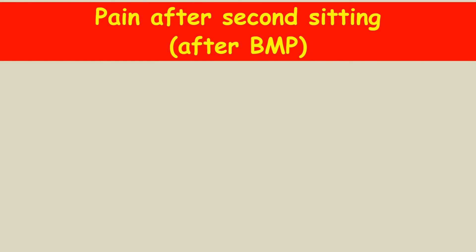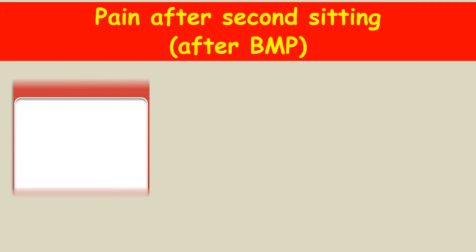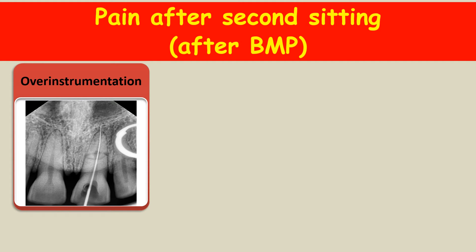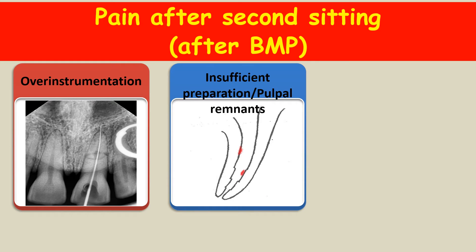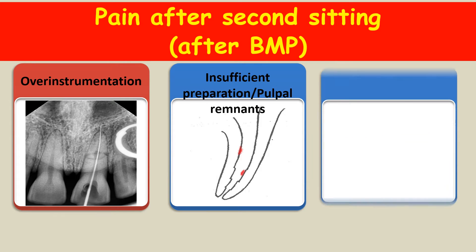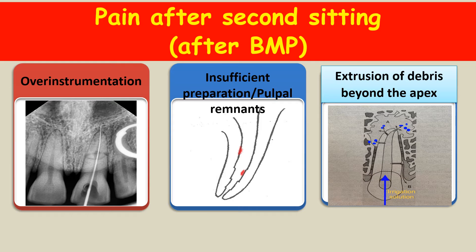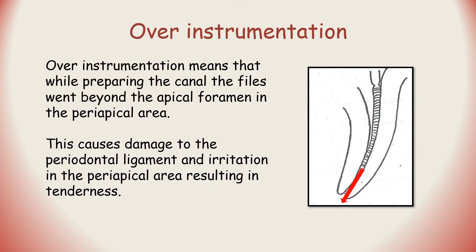Supposing the patient reports with pain after the biomechanical preparation was completed. The possible causes of pain are: firstly, over-instrumentation; then, insufficient preparation of the canals resulting in pulpal remnants still sticking to the walls; and finally, extrusion of debris beyond the apex. Over-instrumentation means that while preparing the canals, the files went beyond the apical foramen into the periapical area. This causes damage to the periodontal ligament and irritation in the periapical area resulting in tooth tenderness.